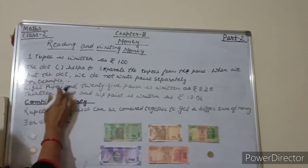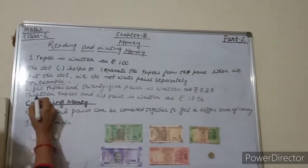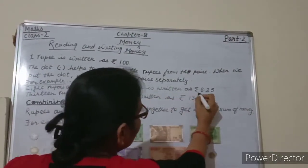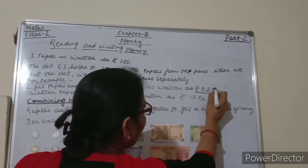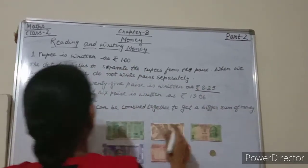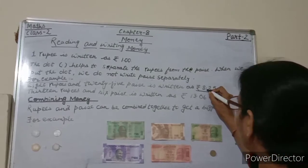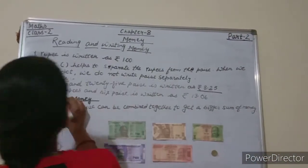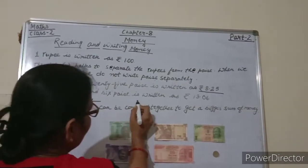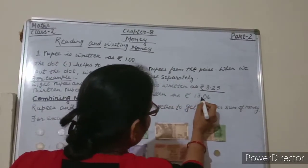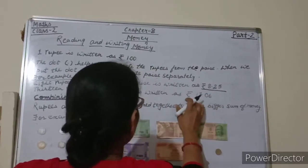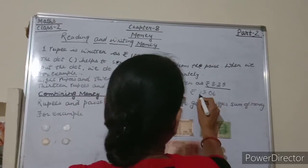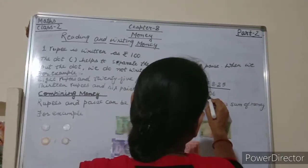For example, 8 rupees and 25 paise is written as 8.25. Here we have given a dot to separate rupees from the paise. Similarly, 13 rupees and 6 paise is written as rupee 13.06. Again, the dot separates rupees from paise.